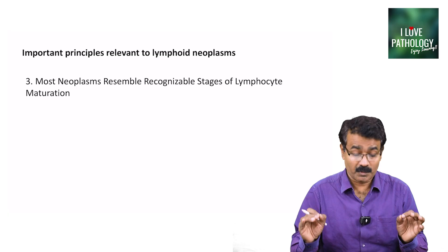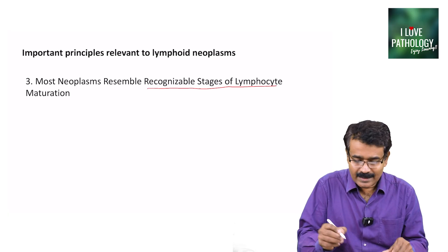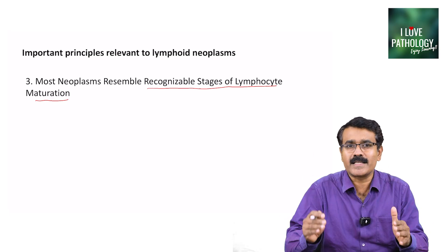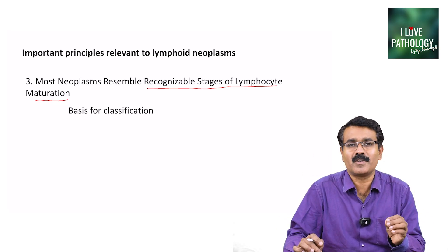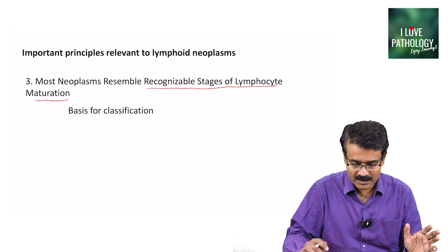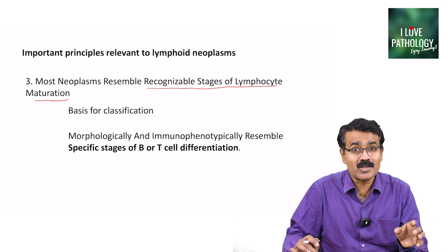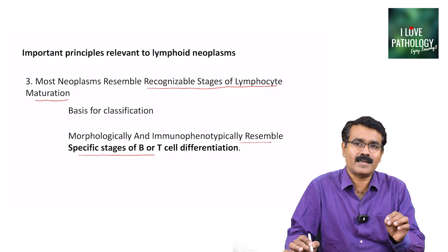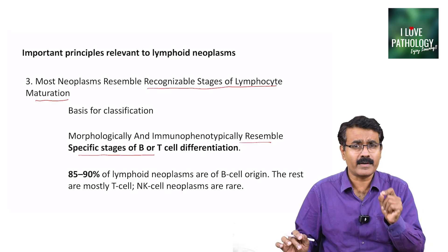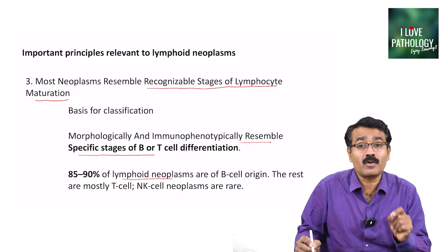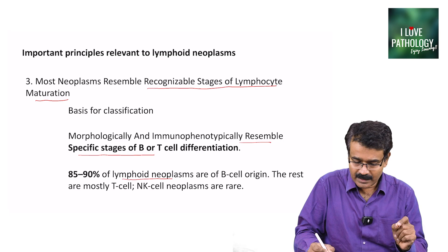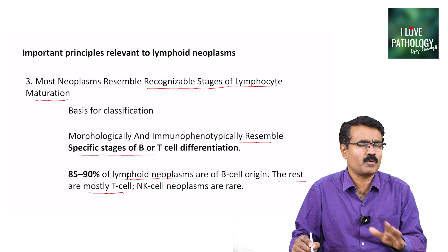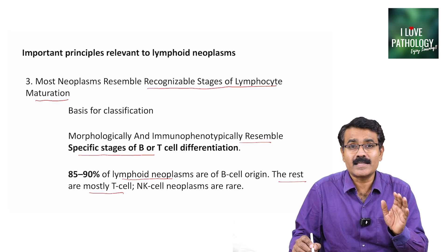The third principle is that most neoplasms resemble recognizable stages of lymphoid maturation — and this is actually the basis for classification of various lymphoid neoplasms, because morphologically and immunophenotypically they resemble specific stages of B cell or T cell differentiation. 85 to 90 percent of lymphoid neoplasms are of B cell origin; the rest are mostly T cell neoplasms, and NK cell neoplasms are extremely rare.